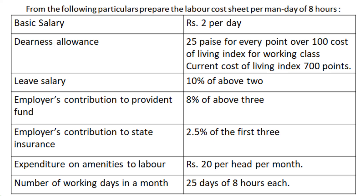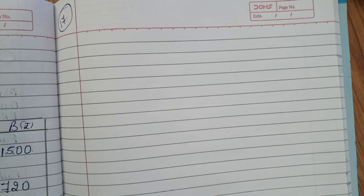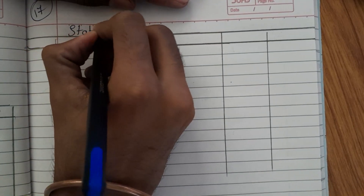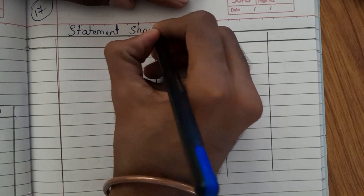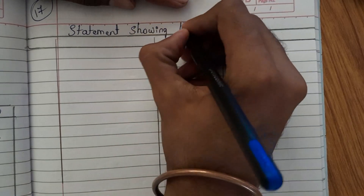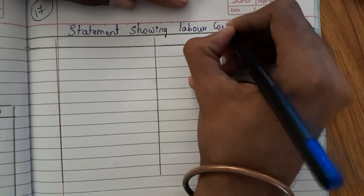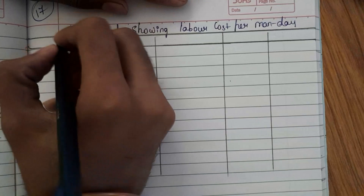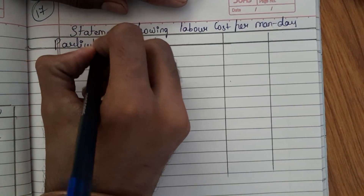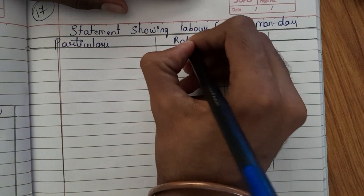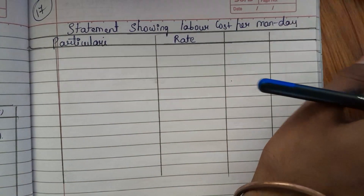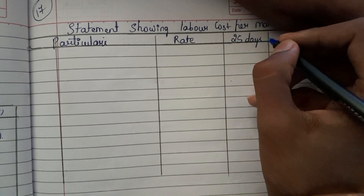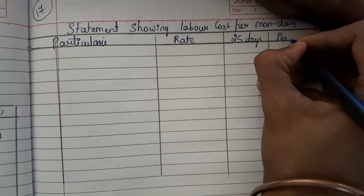Now let us see how to solve this problem. We need four columns. On top we mention: Statement showing labor cost per man day of 8 hours. We need a particulars column, then a rate column showing how it is calculated, then a column for 25 days, and a column for per day.